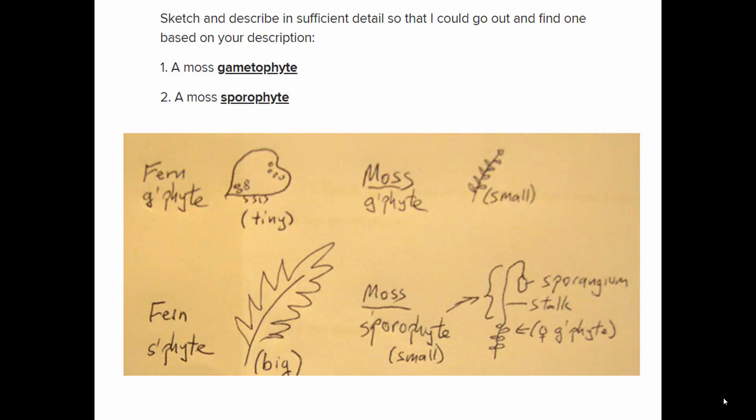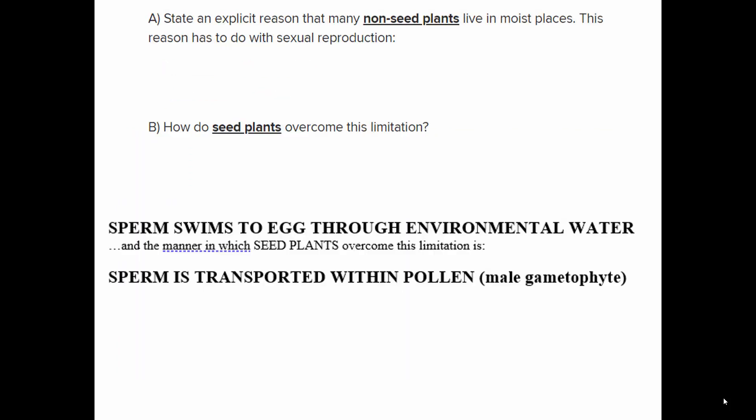Fern gametophytes are small and flat, about the size of a fingernail — very inconspicuous — but they have gametangia on them. The fern sporophyte is what we typically think of when we think of ferns: leafy and large. The distinction is that in mosses the dominant stage in the life cycle is the gametophyte, while in ferns it's the sporophyte.